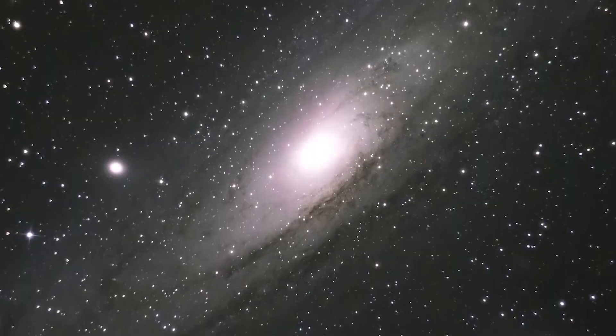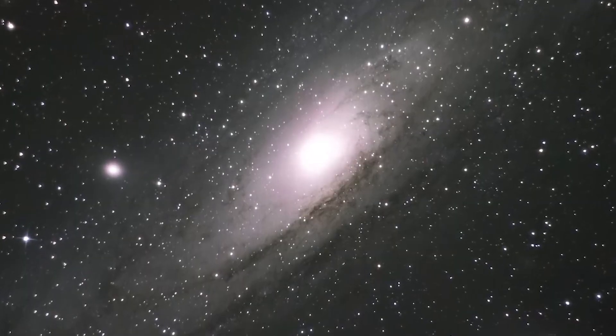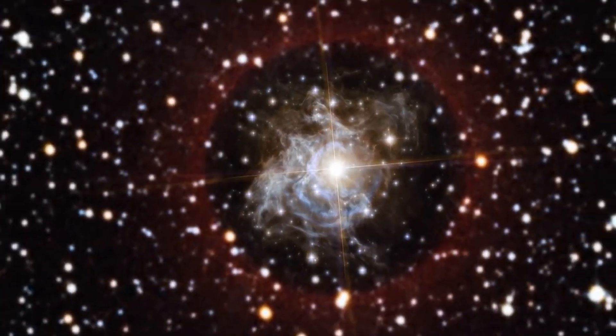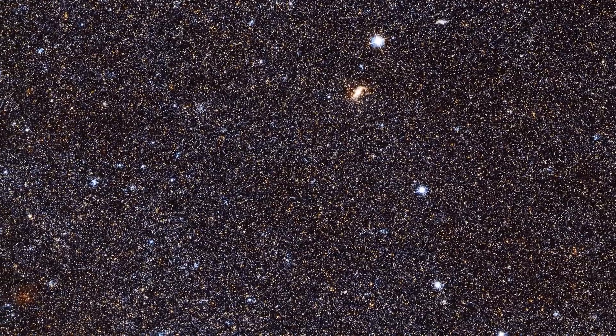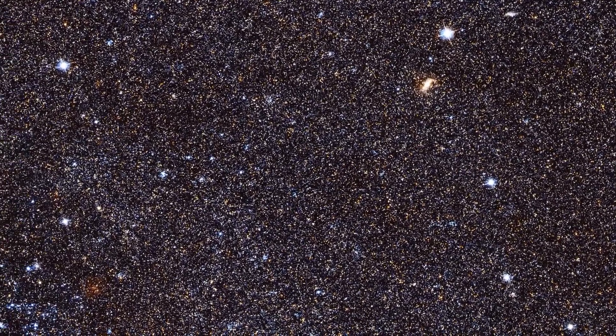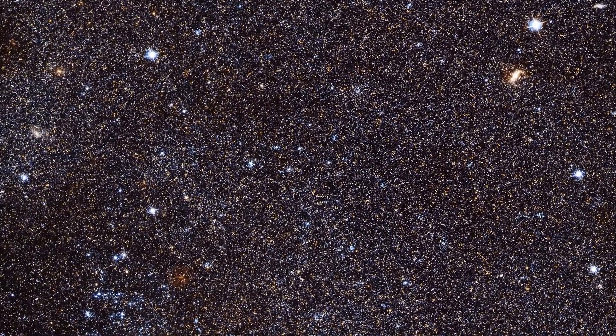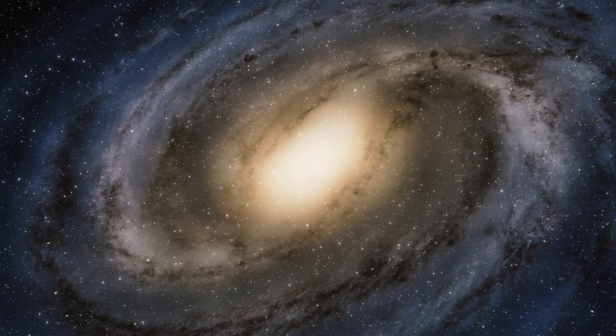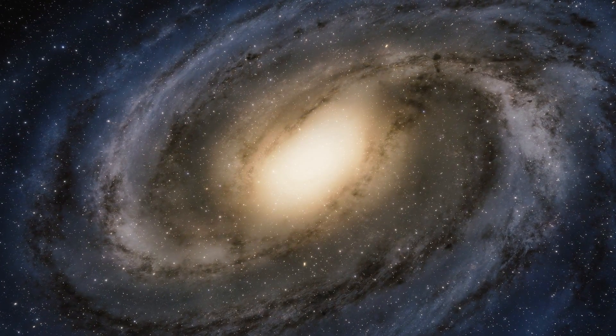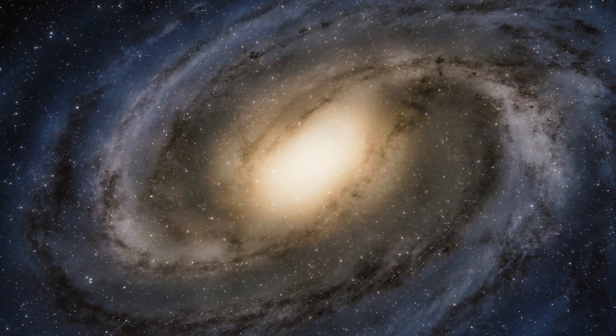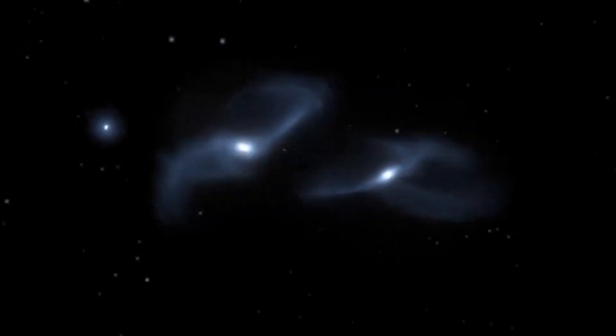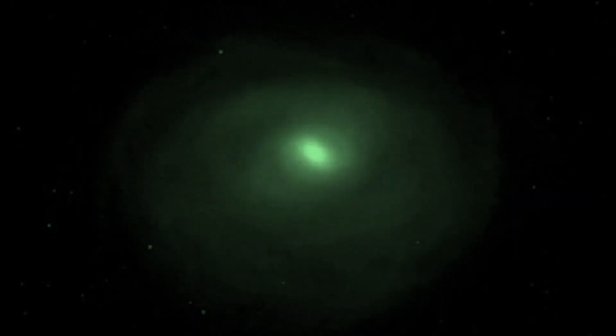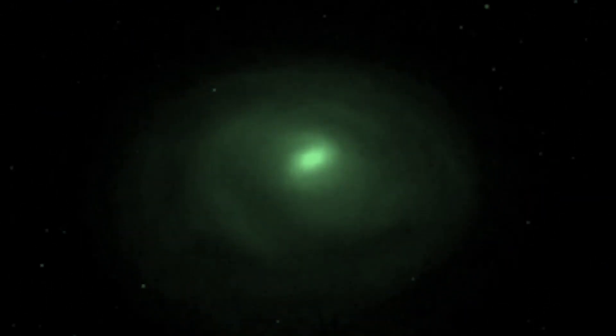A captivating aspect of Andromeda's origin involves the idea that it emerged from the amalgamation of multiple smaller proto-galaxies. This proposition indicates that over countless eons, these smaller galactic components gravitated together, gradually shaping the grandeur of the Andromeda galaxy as we see it today. While such galactic mergers are common cosmic occurrences, their gradual progression makes them imperceptible until significant advancements occur.